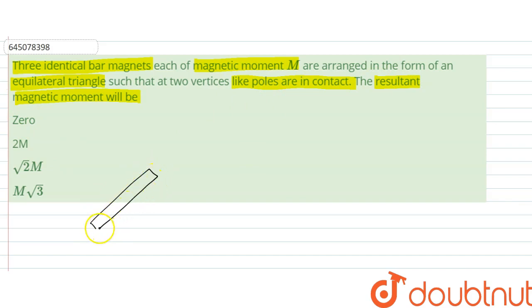What we have is three magnets in the form of a triangle. Let's say that here is north, south, south, north, north, south. Magnetic moments are always in the direction from south to north.